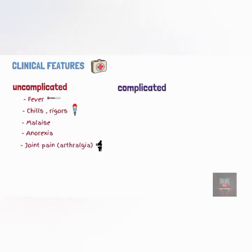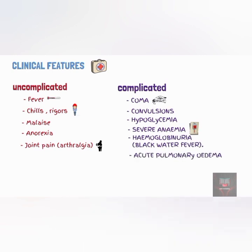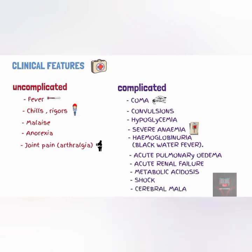Complicated malaria may present with coma, convulsions, hypoglycemia, severe anemia due to excessive destruction of red blood cells, hemoglobinuria also called blackwater fever, pulmonary edema, hepatic failure, metabolic acidosis, shock, and sometimes the Plasmodium may block the blood vessels in the brain leading to cerebral malaria.